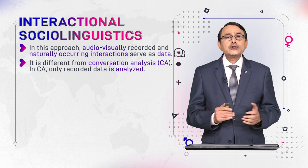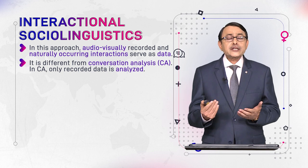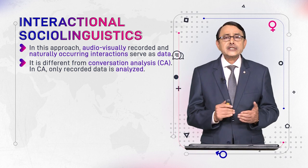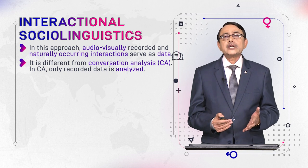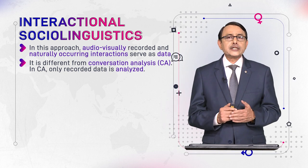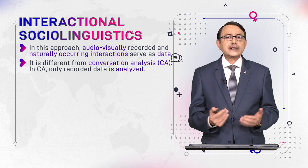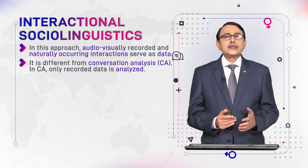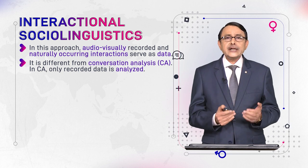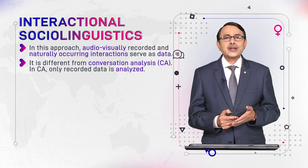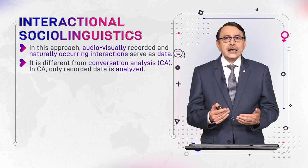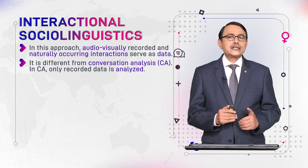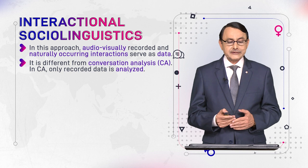Interaction and conversation may both appear the same, but the difference is this: in interactional sociolinguistics, both recorded and unrecorded data can be used for analysis. In conversation analysis, only recorded and scripted data can be used. First we record, then we turn it into scripts, and then scripts are analyzed in conversation analysis. This is the difference.